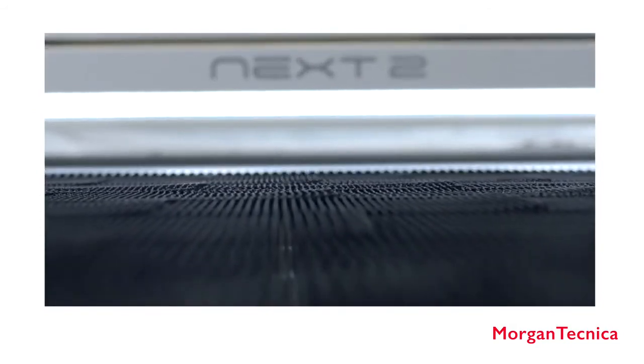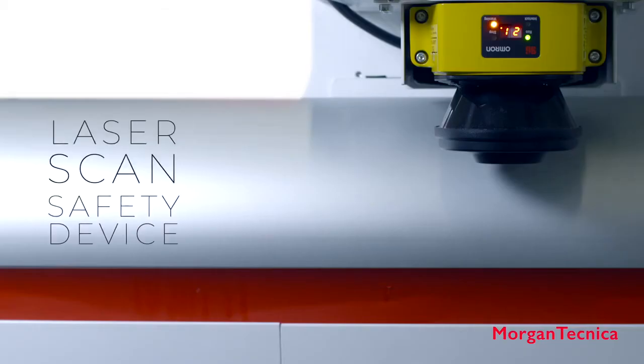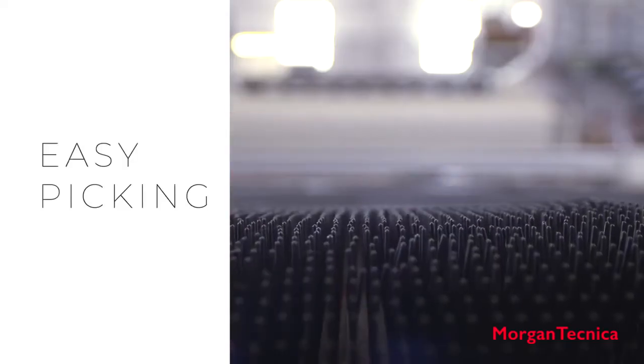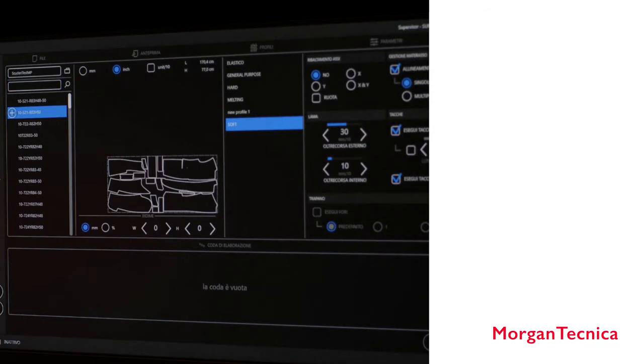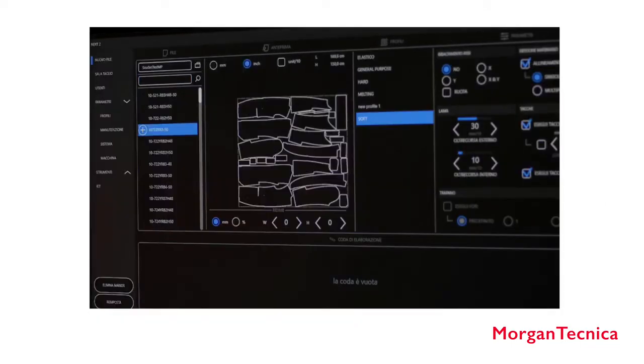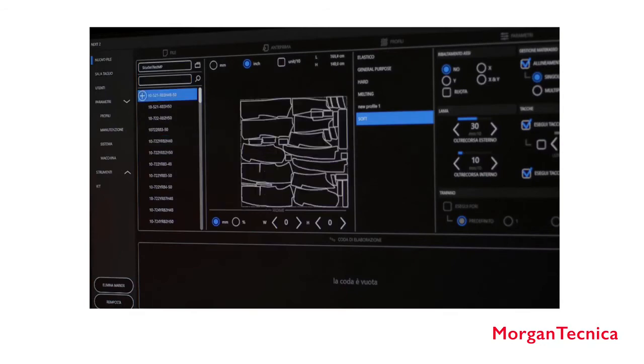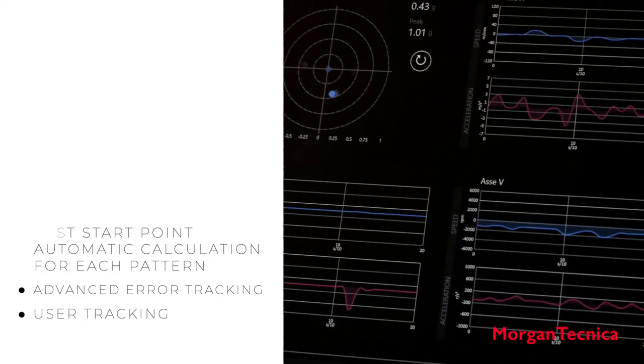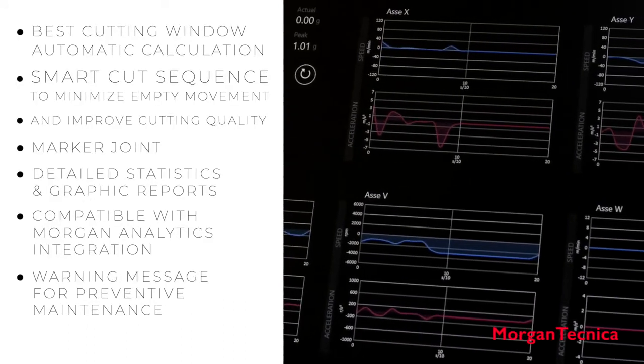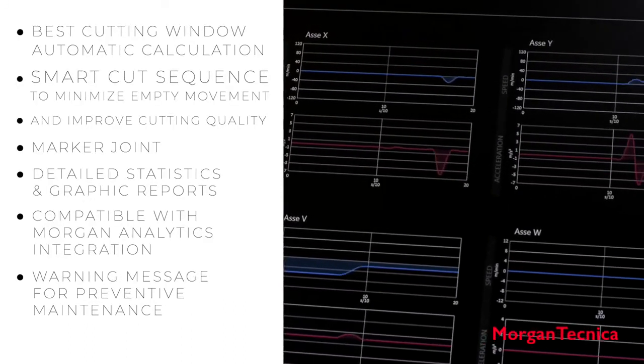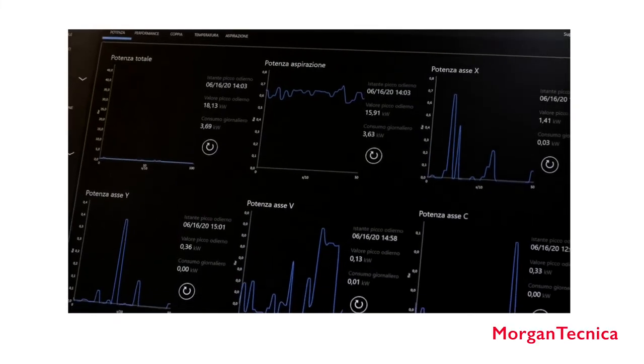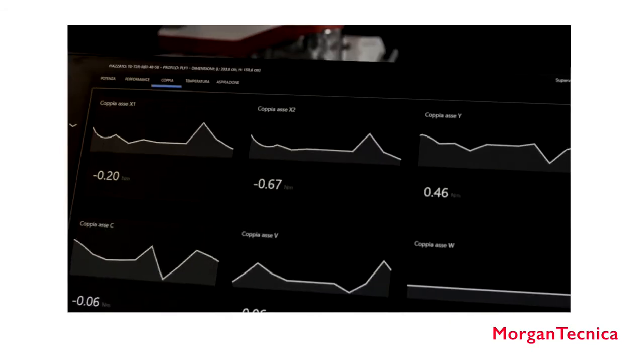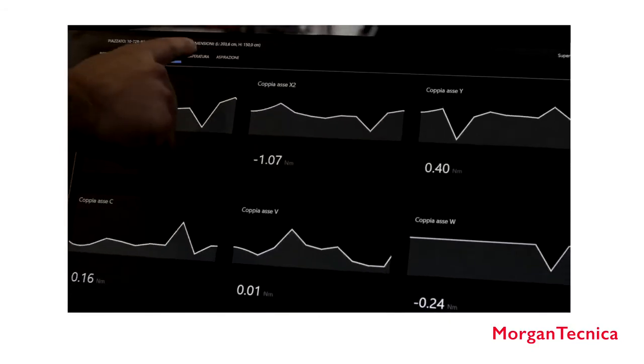Next 2 Delta 70 is equipped with full touch software that's modern and extremely user-friendly. The innovative data control center allows real-time monitoring of motor and blade stress levels, temperatures, consumption, inefficiencies, and a series of useful data to guarantee top quality with optimal performance at the lowest running costs possible.